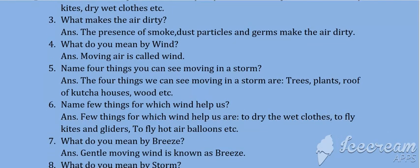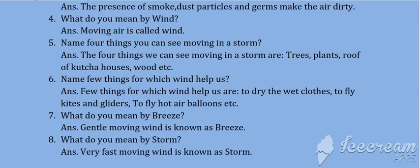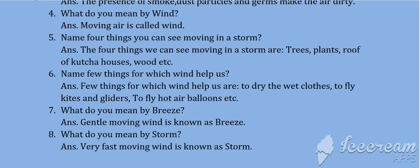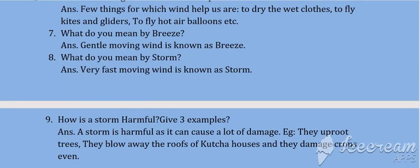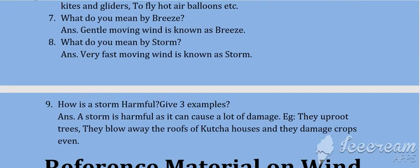What do you mean by breeze? Gentle moving wind is known as breeze. What do you mean by storm? Very fast moving wind is known as storm. How is a storm harmful? Give three examples. A storm is harmful as it can cause a lot of damage. For example, they uproot trees, blow away the roof of kaccha houses, and damage crops.